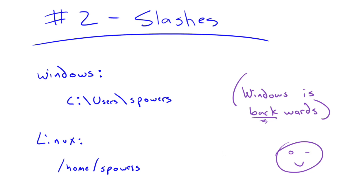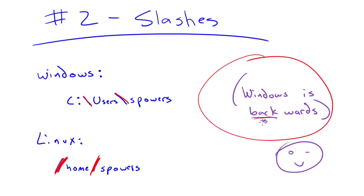Number 2: you may have just noticed when talking about mount points and drive locations, I always use forward slashes. That's because in Linux you use forward slashes, whereas in Windows you use backslashes. I like to think that Windows is backwards because of the backslashes.